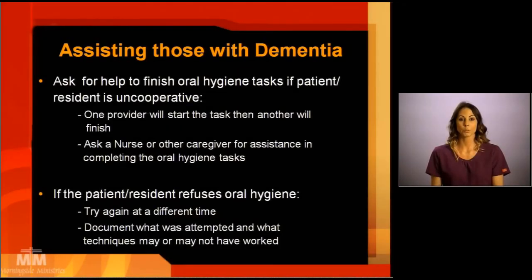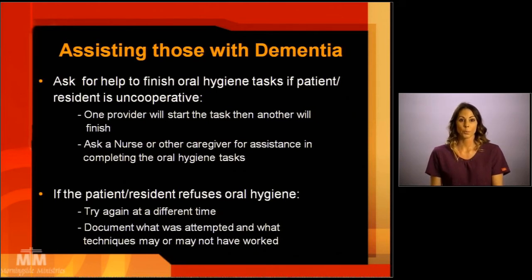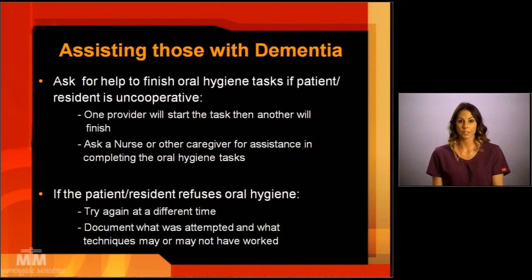When assisting those with dementia, ask for help to finish the hygiene task if the patient is uncooperative. One provider can start the task and another can finish. Ask a nurse or another caregiver to assist in completing the oral hygiene tasks. If the resident or patient refuses oral hygiene, try again at a different time — sometimes they're just not ready. Document what you tried, and what worked and what didn't.